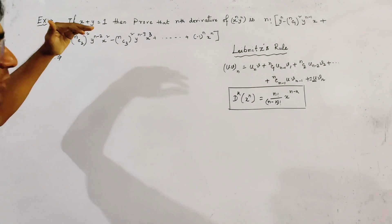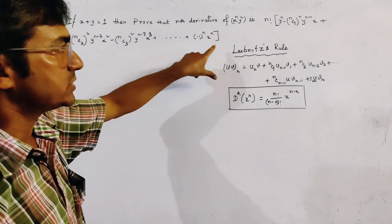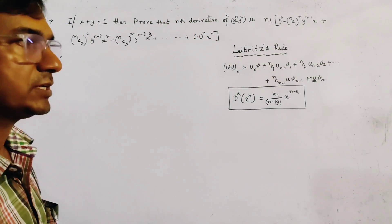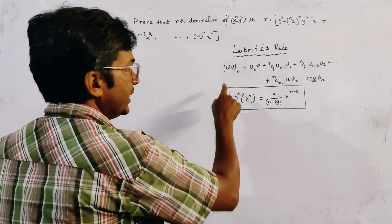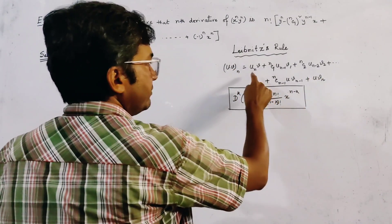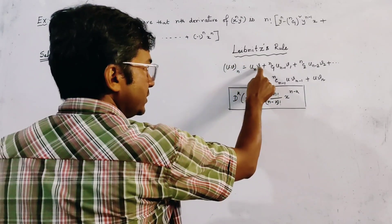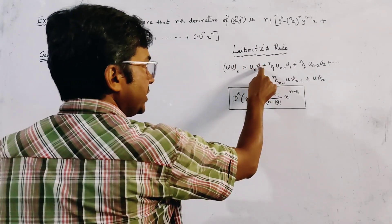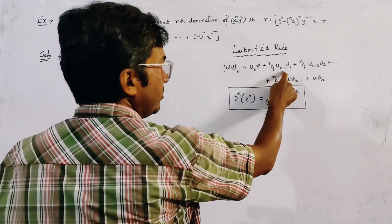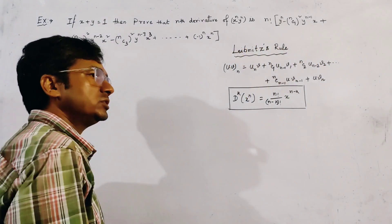To prove this result, we use two important rules. The first rule is the Leibniz rule, also called the Leibniz theorem of successive differentiation. This rule states that (uv)_n — where the suffix n denotes the number of derivatives — equals: the nth derivative of u times v, plus nC1 times the (n-1)th derivative of u times the first derivative of v, plus nC2 times the (n-2)th derivative of u times v2, and so on. The suffix denotes the number of derivatives.